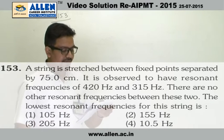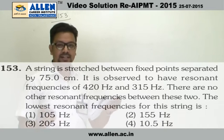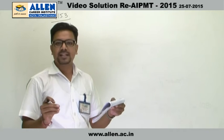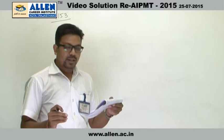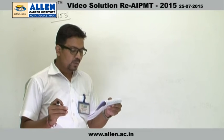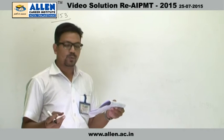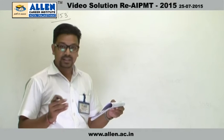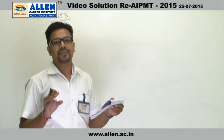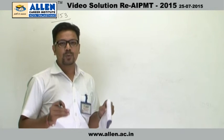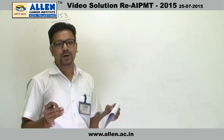In question number 153, we are provided with a string that is stretched between two points. The string is said to be of length 75 cm. It has two resonant frequencies: one is 420 Hz, the other one is 315 Hz. In the next line it says that between these two frequencies, there are no other resonant frequencies. That simply tells us that these two frequencies are the two consecutive frequencies.